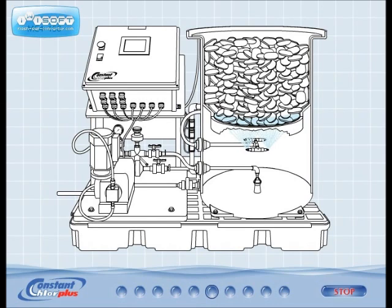Unlike larger tabs, the unique shape of the Constant Chlor plus calcium hypochlorite briquettes allows for a more uniform and larger surface area to come into contact with the spray of the water, making a very consistent and concentrated 1.5% solution of available chlorine.